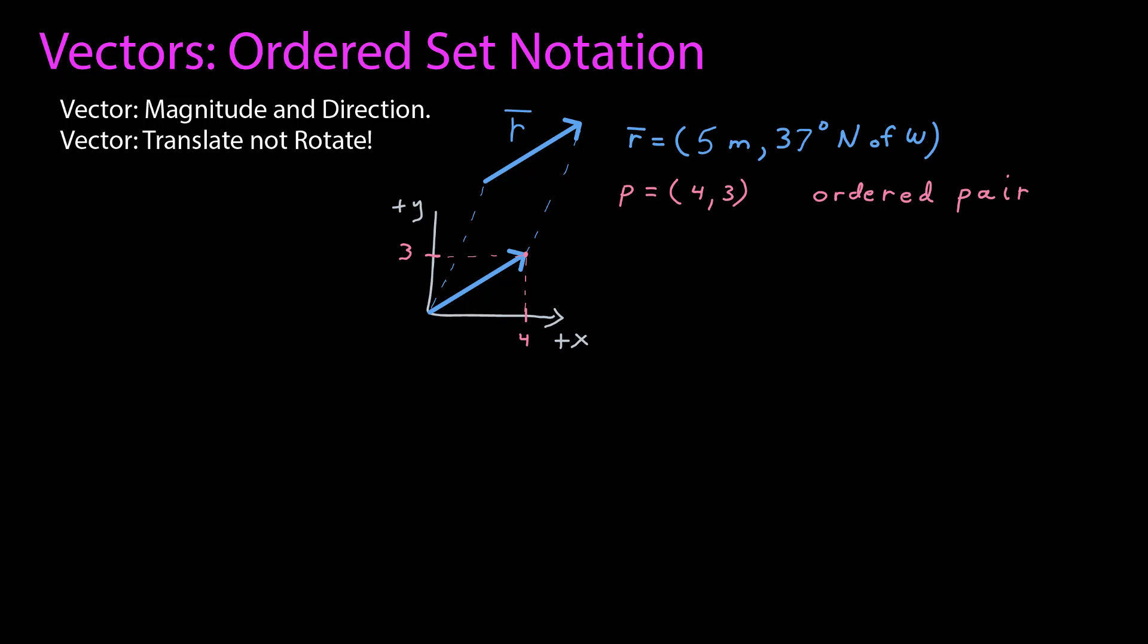For this one, that point is (4, 3). And that's called an ordered pair. An ordered pair is an ordered set of two elements. And an ordered set just means that the order of the elements is important.